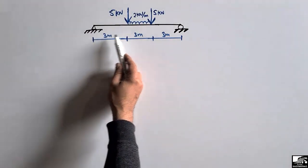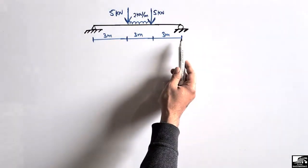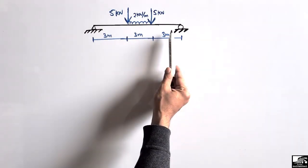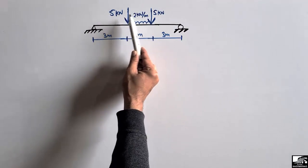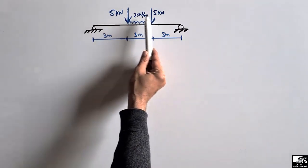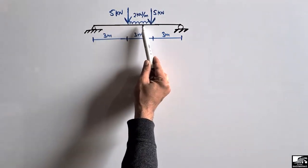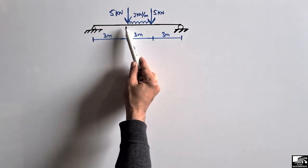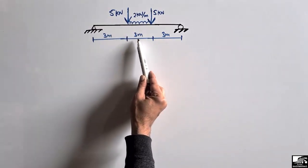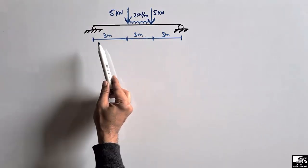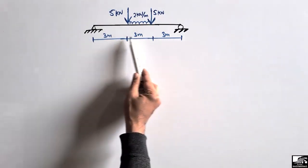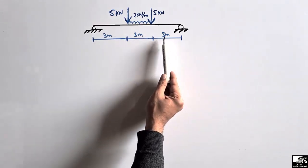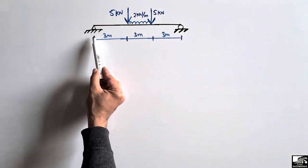This is a simply supported beam and there are two different types of loading acting on it: a point load of 5 kN and a distributed load of 2 kN per meter. The distributed load is distributed over a length of 3 meters, while the whole length of the beam is 9 meters — that is 3 m + 3 m + 3 m.